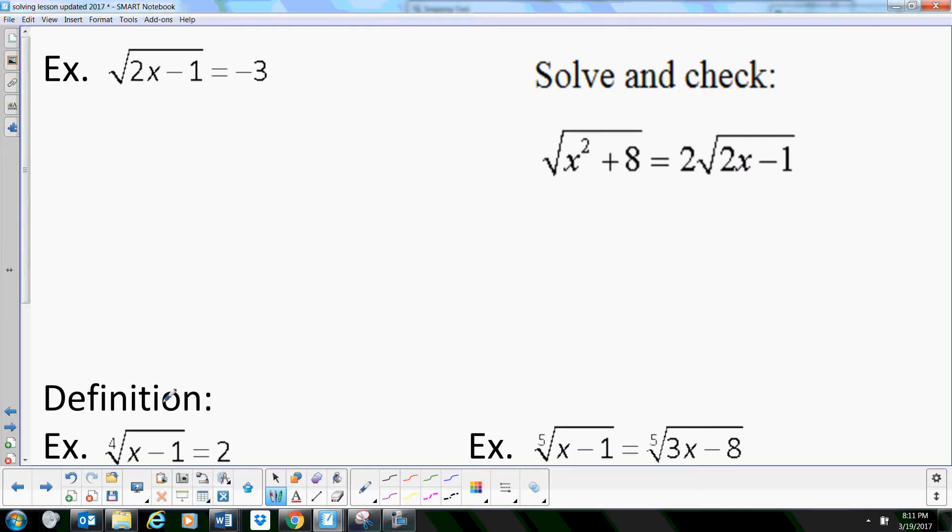Let's look at a couple more. We've got the square root of 2x minus 1 equals negative 3. The radical's already isolated, so let's square both sides. We're going to get 2x minus 1 equals 9. Add 1, so you get 2x equals 10. So x is 5.